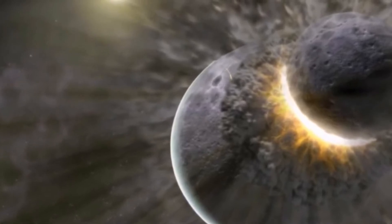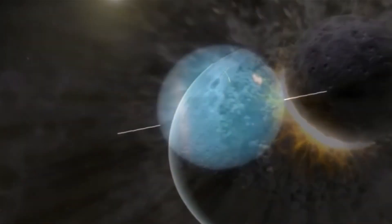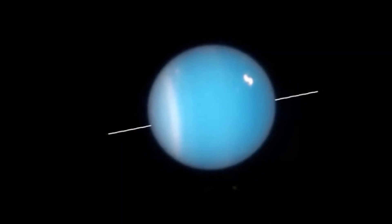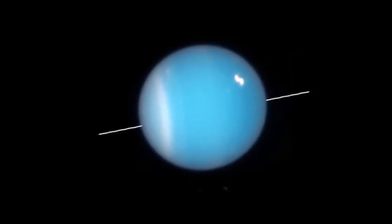This causes the planet to rotate on its side like a bowling ball.